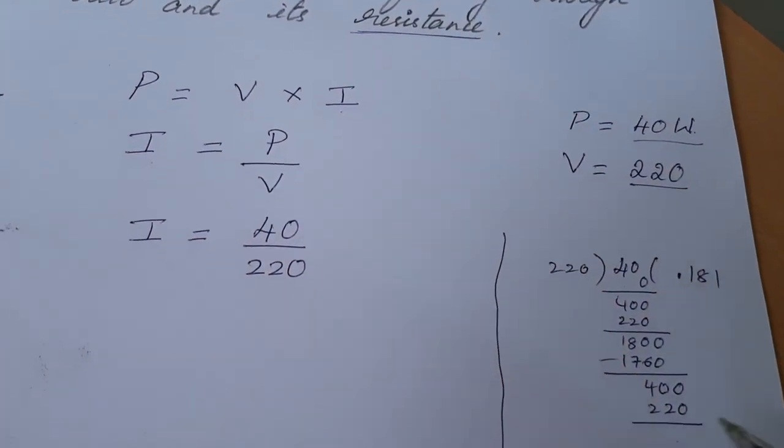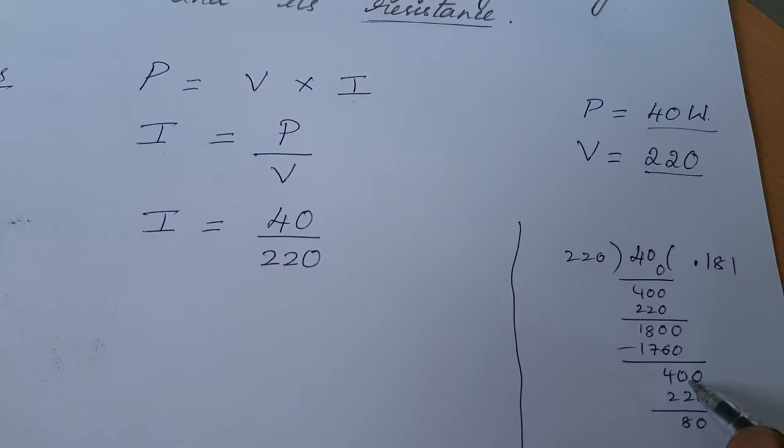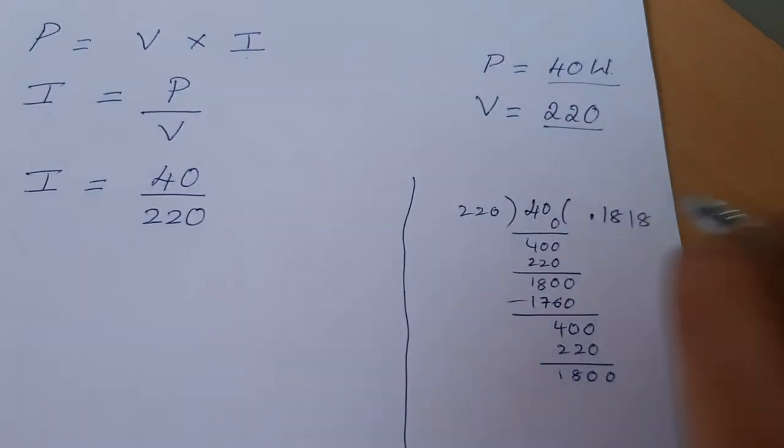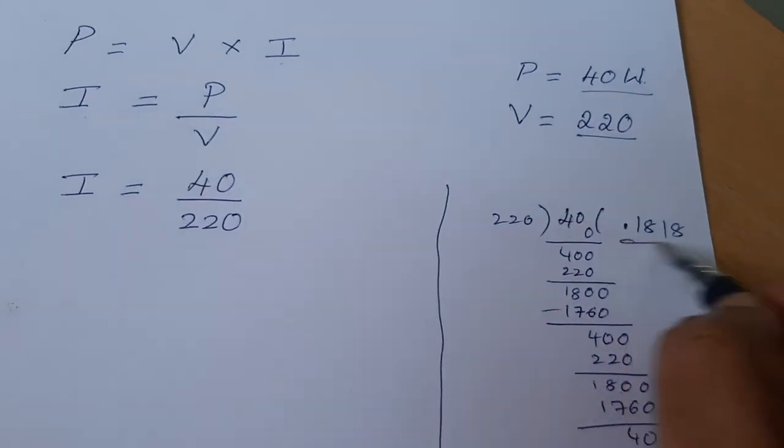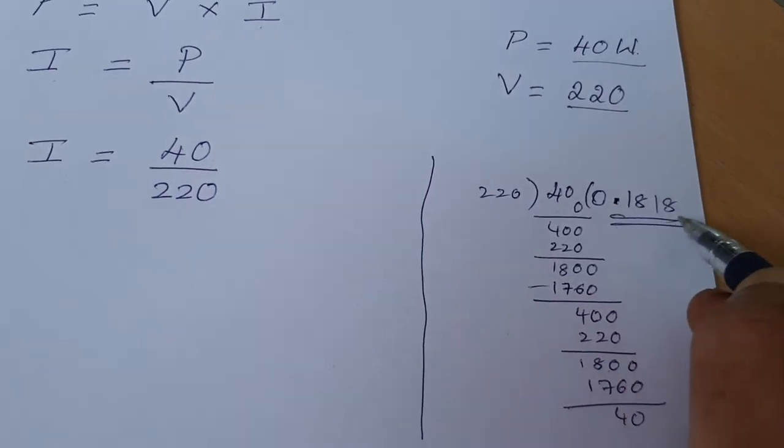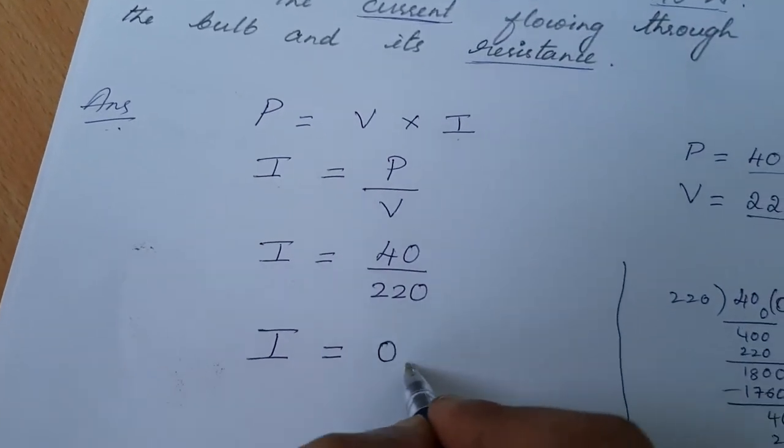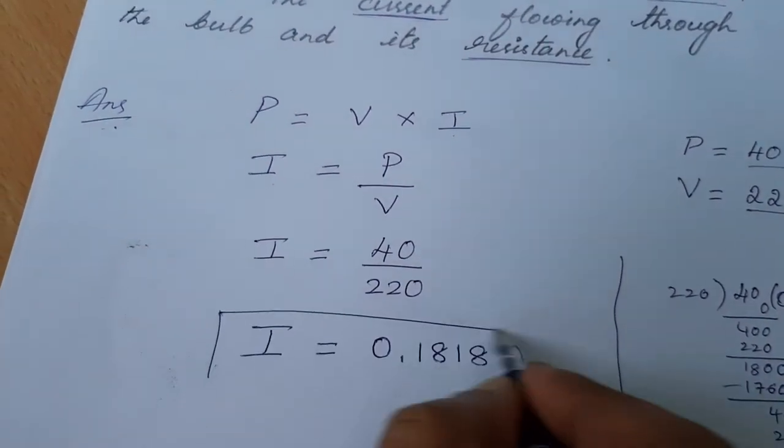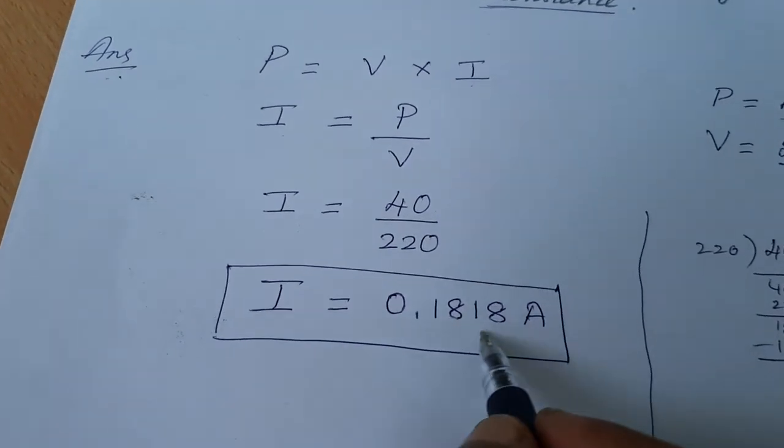If I put one more 0 here, again it will go one time, then 8 times again. So it will continue. I will stop it here. I will take it as 0.1818. So here I have got current I equals 0.1818 Ampere. So this is the current.